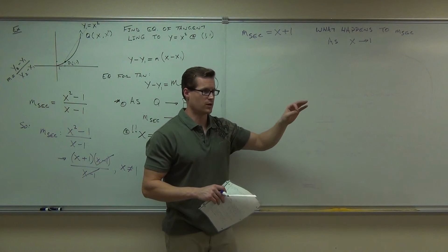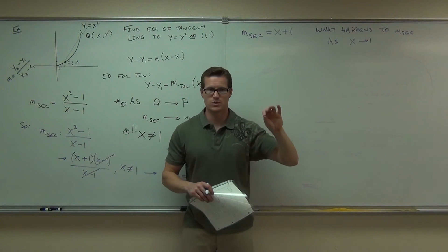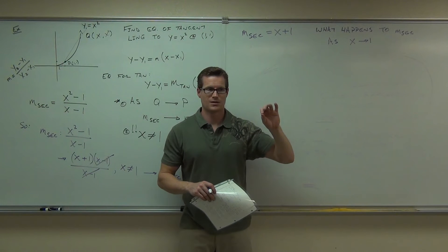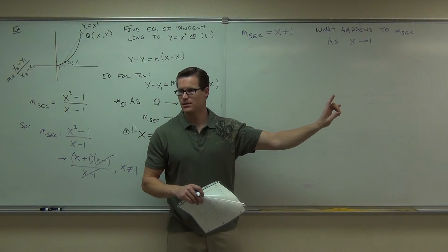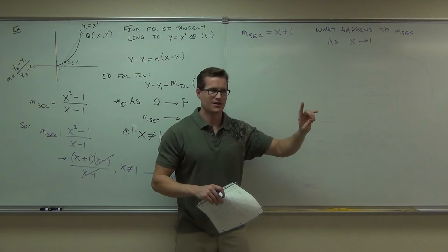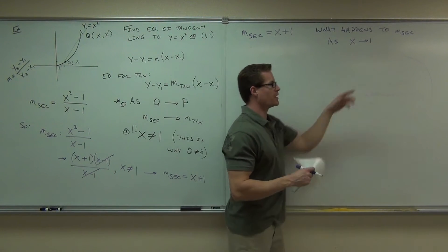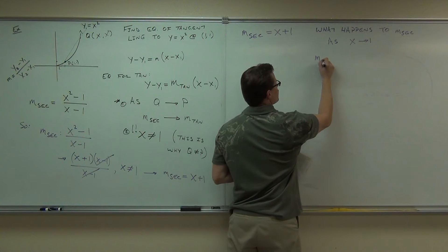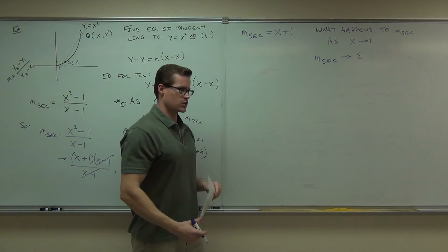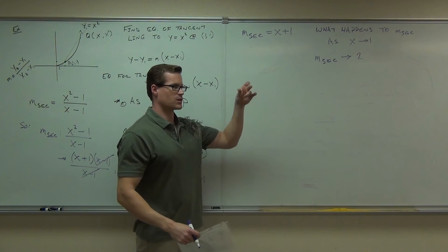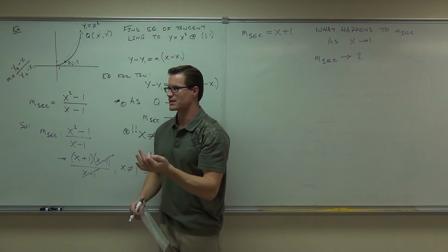Move it down to 1.001, what would you get? 2. You'd get 2.0 for every little one, wouldn't you? Would you say that as this thing gets closer to one, the slope of our secant gets closer to two? Because I'm plugging in things really close to one, I'm going to get out things that are x plus one — really close to two. Does that make sense to you?